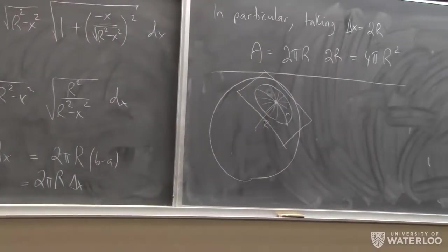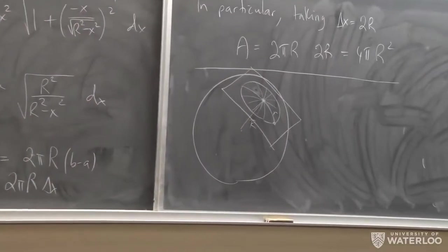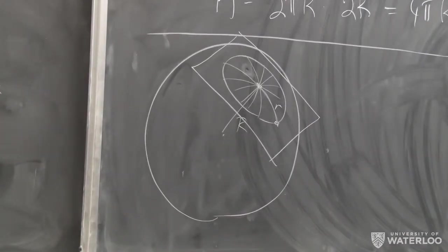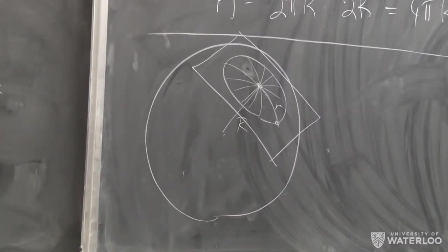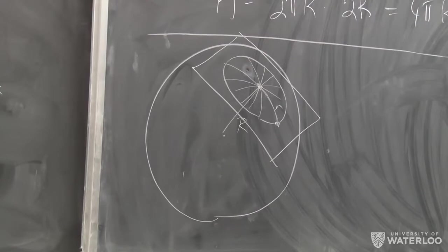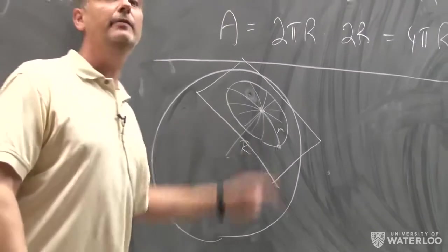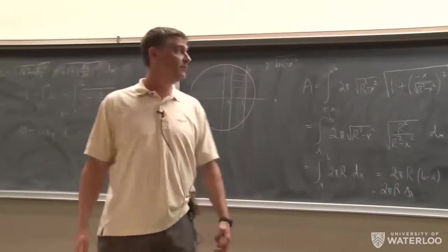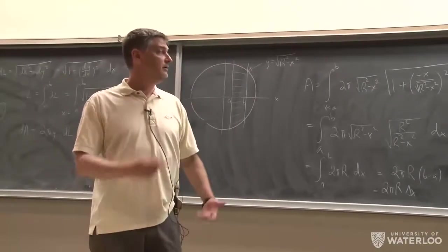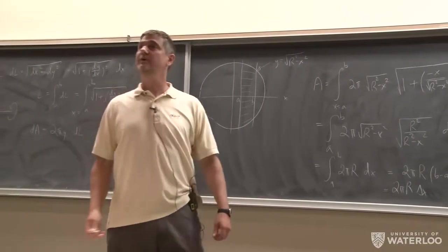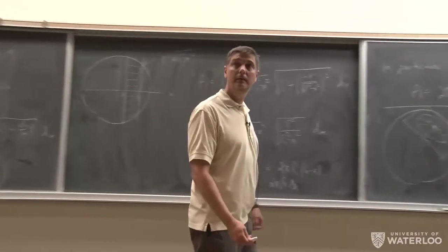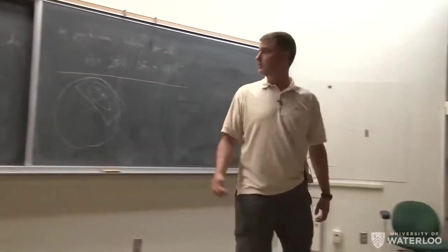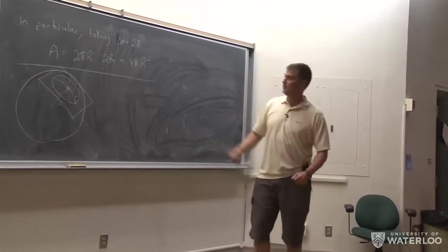When a plane intersects the sphere, it'll intersect it in a circle. We can ask: what's the formula for the circle's circumference or the circle's area? So here's a problem: find a formula for the circumference of a spherical circle of radius r, and find a formula for the area of that same circle.